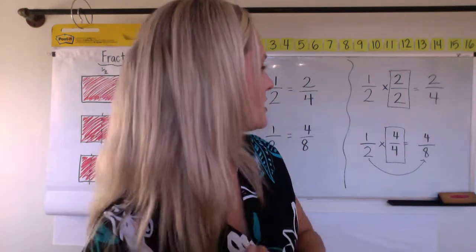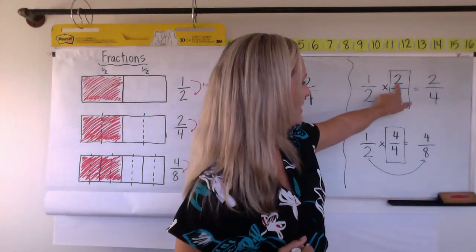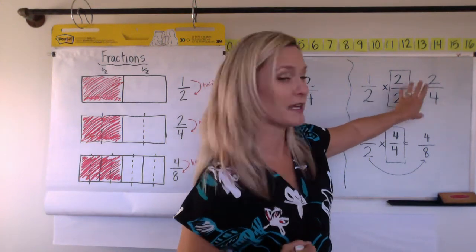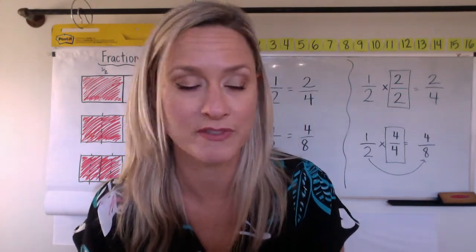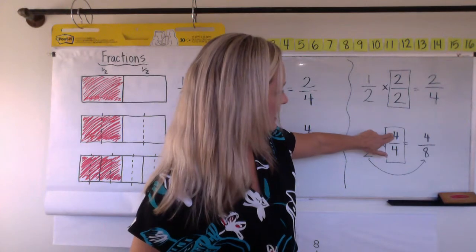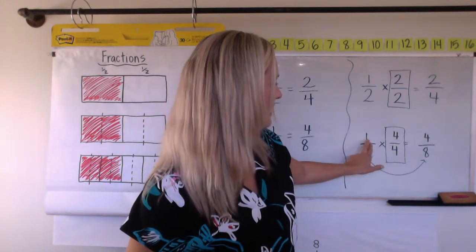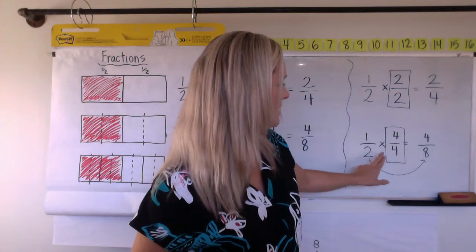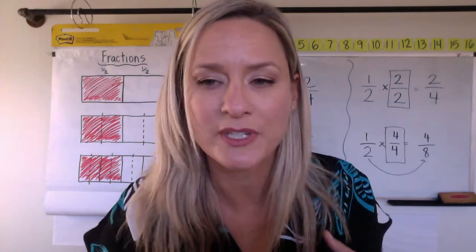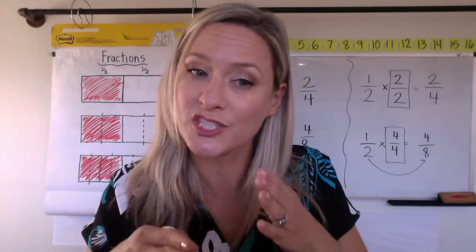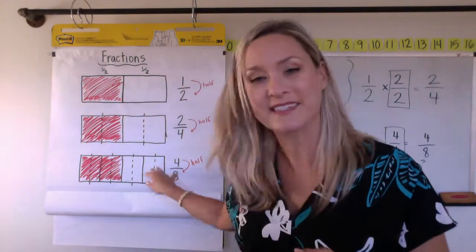So maybe you noticed just now that if you multiply the numerator and denominator by the same number, it gives you an equivalent fraction. Same thing down here. This four and this four are the same number. When you multiply the numerator by four and the denominator by four, it gives you an equivalent fraction. It's just broken up into different sized pieces, right?